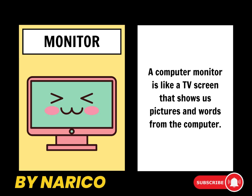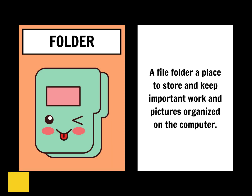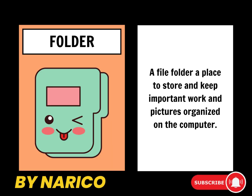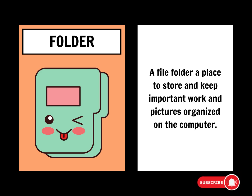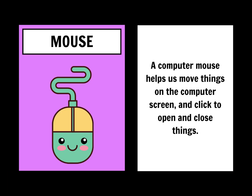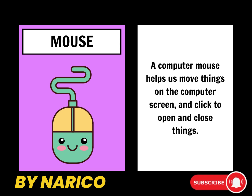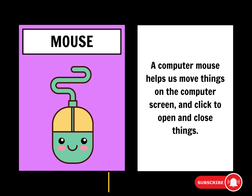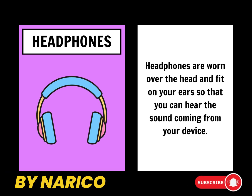A computer monitor is like a TV screen that shows us pictures and words from the computer. A file folder is a place to store and keep important work and pictures organized on the computer. Wi-Fi helps different devices talk to each other without needing wires. A computer mouse helps us move things on the computer screen and click to open and close things. Headphones are worn over the head and fit on your ears so that you can hear the sound coming from your device.